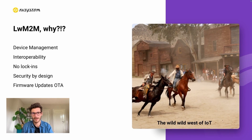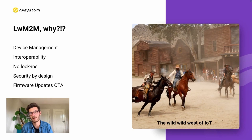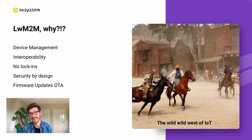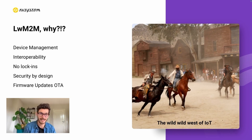As a response to this fragmented market, a few very clever people from the organization called OMA SpecWorks set together and started collecting the best practices from the IoT market and developed a framework on how IoT applications should ideally be designed. This led to the release of the Lightweight M2M standards in 2017. The goal was to standardize the IoT market and guide developers into building interoperable products, meaning that any device can communicate with any server and vice versa, as long as they adhere to this open standard.